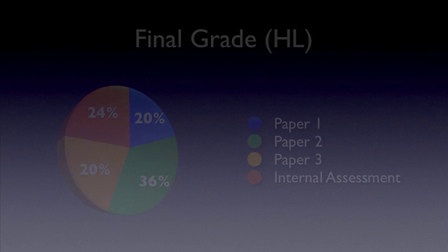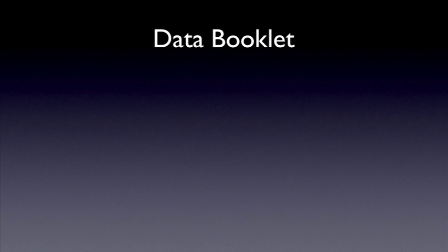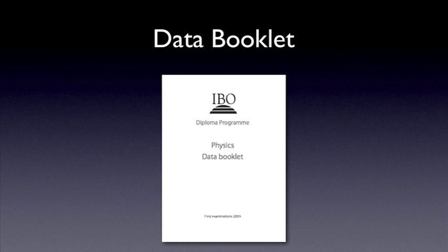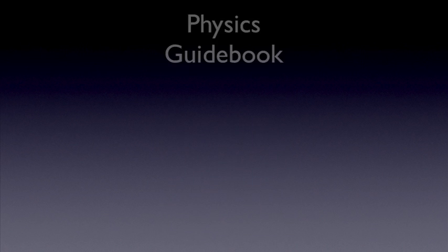And now a couple of closing remarks. Most of the important formulae used during the course are available in a data booklet. The booklet is produced by the IBO and you will be provided with a clean copy of it during each of the three examinations. Essential information about the IB Physics course can be found in the Physics Guidebook produced by the IBO. Ask your teacher for more details.